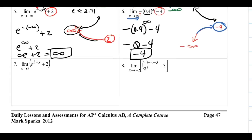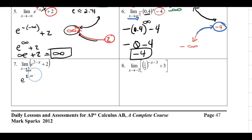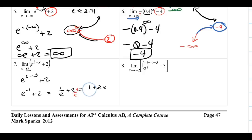Examples 7 and 8 introduce a twist: the limit is at a specific finite value of x, not at infinity. For Example 7, x approaches 3. Since exponential functions are continuous, we use direct substitution: e^(2-3) = e^(-1) = 1/e. Adding 2 gives 1/e + 2, which written with a common denominator is (1 + 2e)/e.